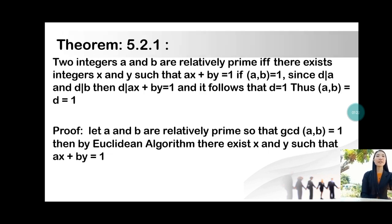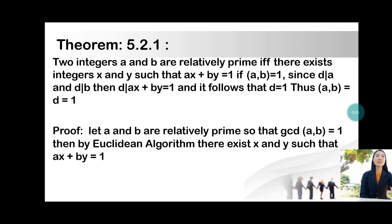Theorem 5.2.1: Two integers a and b are relatively prime if there exist integers x and y such that ax + by = 1. Proof: if gcd(a, b) = 1, since d divides a and d divides b, then d divides ax + by = 1. It follows that d = 1, thus gcd(a, b) = 1.